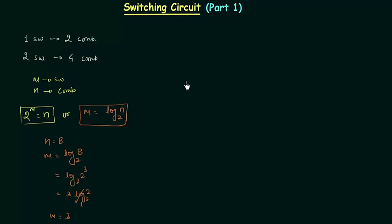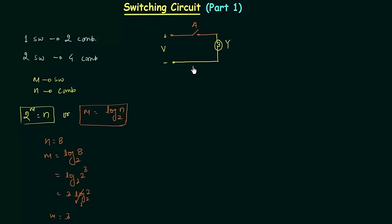Now if I consider a switch and a bulb arranged in series: this is switch A, and we have a bulb here acting as our output Y. I apply voltage V. When this bulb is on I will consider the output to be 1, and when this bulb is off I will consider the output to be 0.